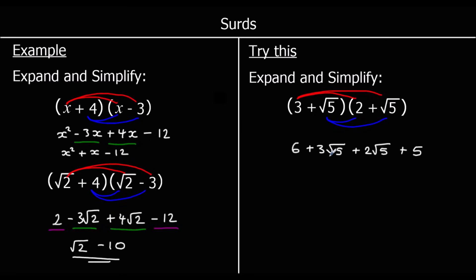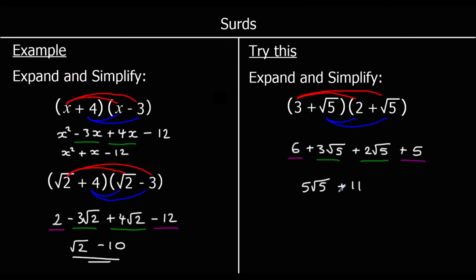So collect like terms. I've got two root 5 terms and two numbers I can add together. For the root 5s: 3 root 5s plus 2 root 5s. 3 of something plus 2 of something is 5, so 5 root 5s. And I've got 6 plus 5, which is 11 — positive 11. So I've got 5 root 5s plus 11. And that's the answer.